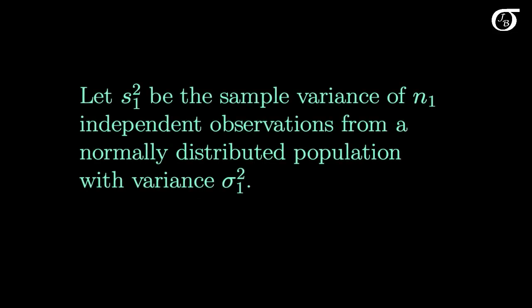For this method we are going to be assuming that we are sampling from normally distributed populations. We're going to let S1 squared be the sample variance of N1 independent observations from a normally distributed population with variance sigma 1 squared. Similarly, S2 squared is the sample variance of N2 independent observations from a normally distributed population with variance sigma 2 squared. We're going to assume that the samples are independent, and we're going to need that for this method to be reasonable.